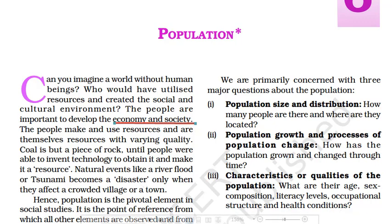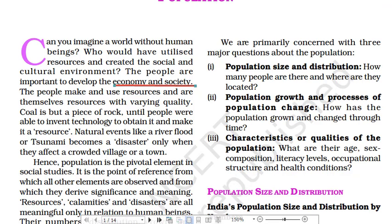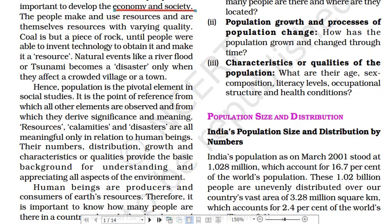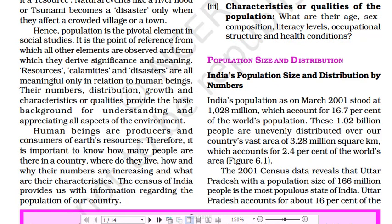Since population is the pivotal element in social studies, it is also the point of reference. There is only one resource if the human population can find it out. There is only one calamity or disaster only if human beings are affected. Human beings are also producers and consumers, and also earth's resources. So it is very important that we understand how human beings are populated and how their numbers increase or decrease, so we can allocate resources accordingly. We have a process for this called the census.